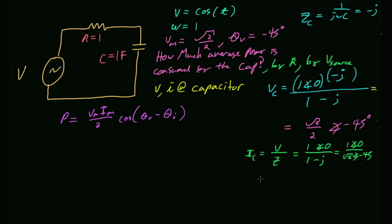For the current, I = V/Z using the source voltage 1∠0° divided by the total impedance 1−j = √2∠−45°. So I = (√2/2)∠45°. Therefore IM = 1/√2 = √2/2 and θI = 45°.